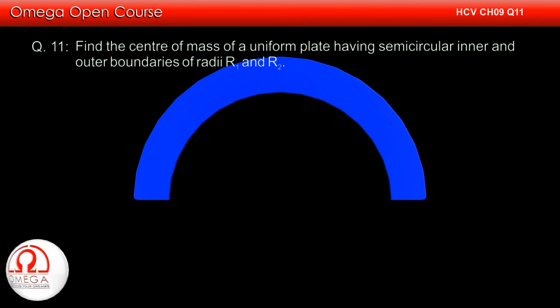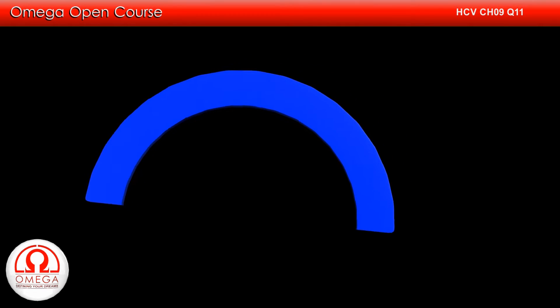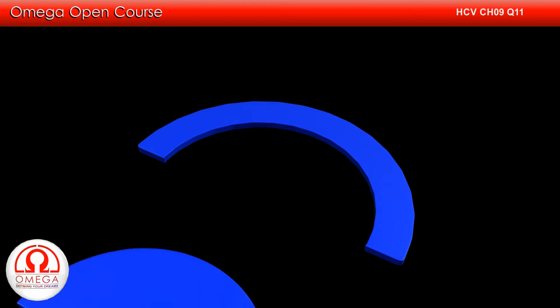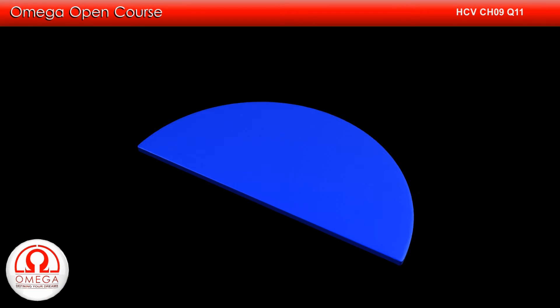Find the center of mass of a uniform plate having semicircular inner and outer boundaries of radii R1 and R2. As you can see in the animation, this plate can be created by removing a semicircular disk of radius R1 from a semicircular disk of larger radius R2.